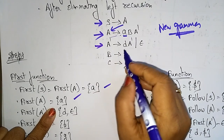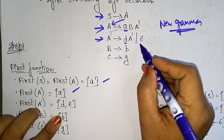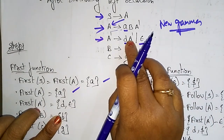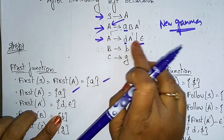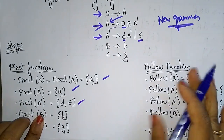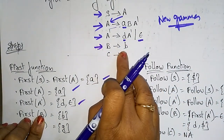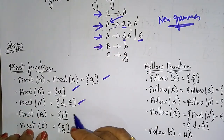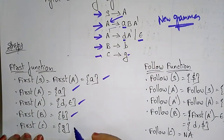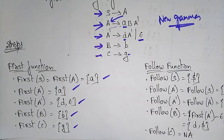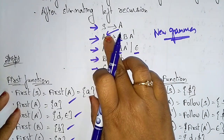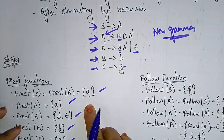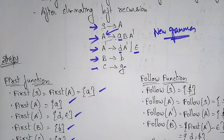For FIRST(A'): there is a terminal 'd', so write 'd'. There are two productions — A' → DA' and A' → ε — so FIRST(A') = {d, ε}. For FIRST(B): the terminal 'b' is directly there, so FIRST(B) = {b}. For FIRST(C): the terminal 'g' is directly there, so FIRST(C) = {g}.